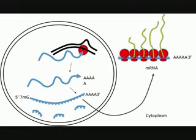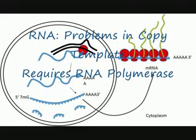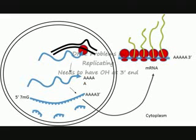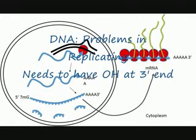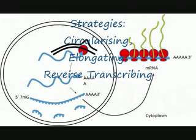These steps may vary slightly in both RNA and DNA viruses. RNA viruses have a problem using their RNA genome as a copy template. Thus, they require the help of RNA polymerase to copy the RNA genome. As for DNA viruses, they encounter problems in replicating. In a host cell, a primer 3' OH must be present at the end. Thus, DNA viruses develop strategies like circularizing their DNA, elongation of 3' OH group, and reverse transcription to ensure replication.